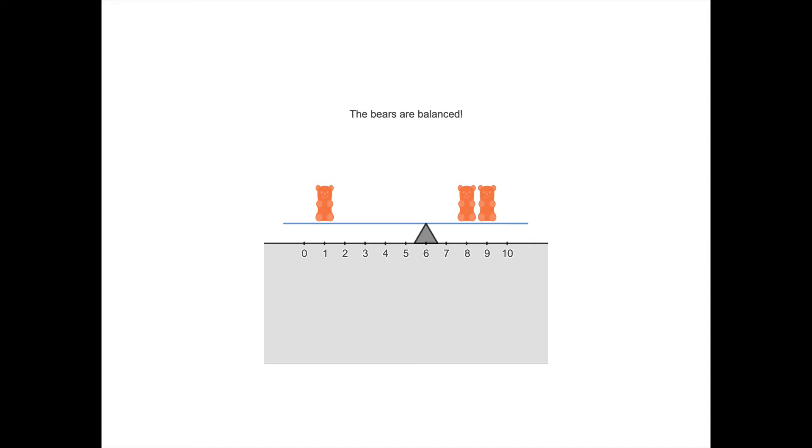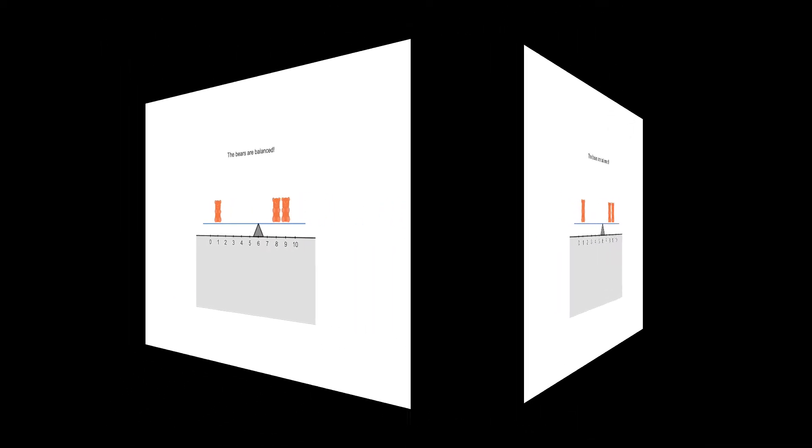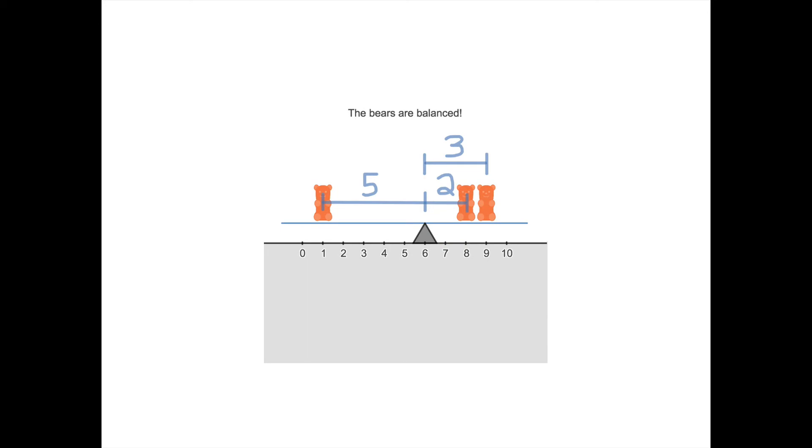This really helps you visualize what it means for 6 to be the mean. The mean is at the center of our data, the center meaning the balance point, so that for every data item that's above the mean we have data that's below the mean to balance it out.